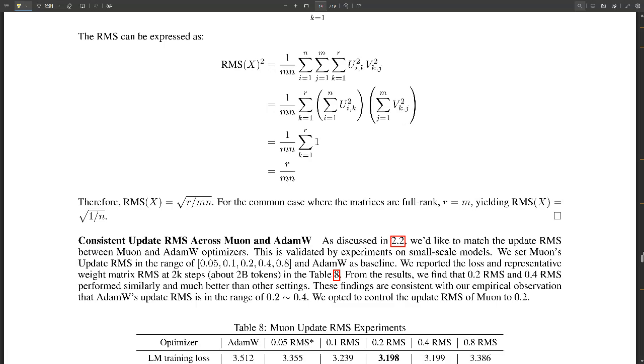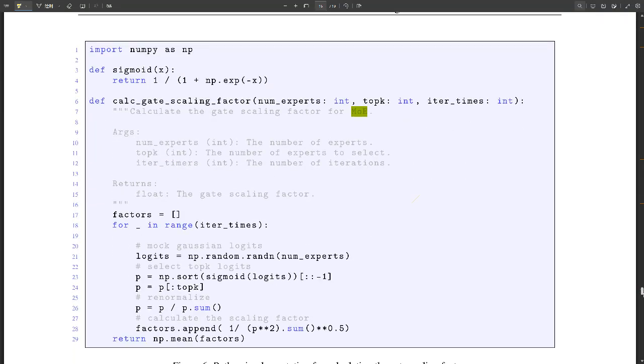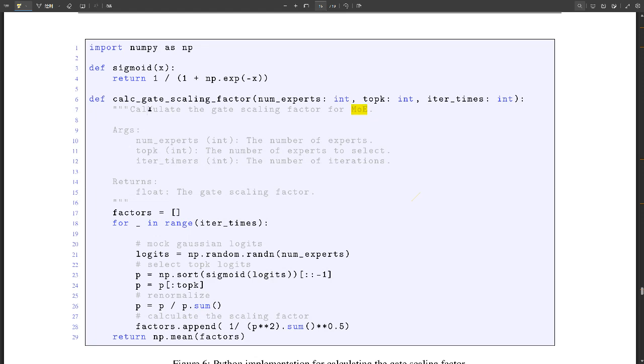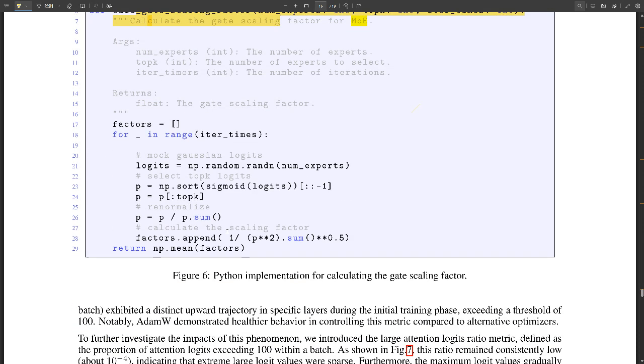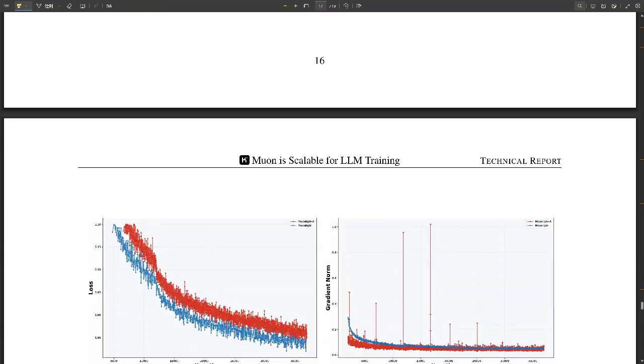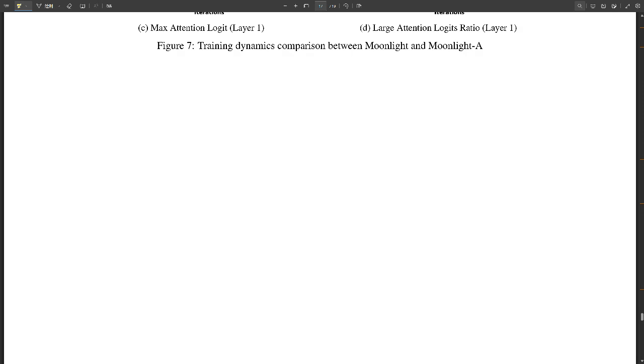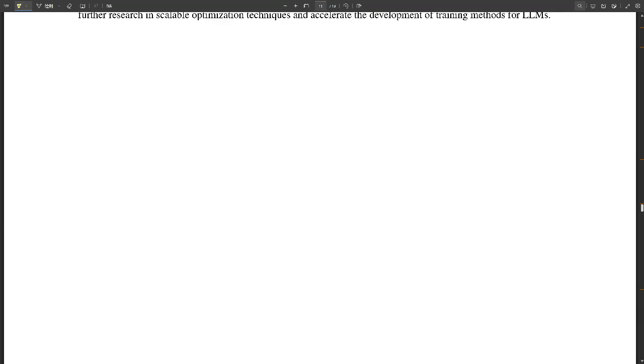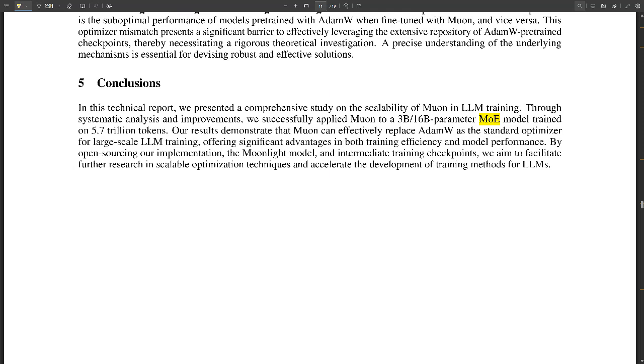But does this mean that MoE models are always better? Are they inherently better than a single massive model? Well, not necessarily. It really depends on the task and how well those experts are trained. But MoE does offer some really compelling advantages. Firstly, it can handle a wider range of tasks with better accuracy because it's going to that specific expert right. Right. And secondly, it can be more efficient because it only activates the experts that are necessary for that input. So that saves on computational power.